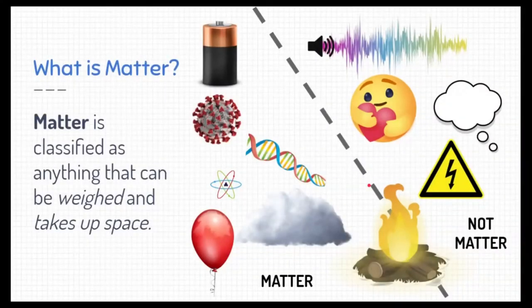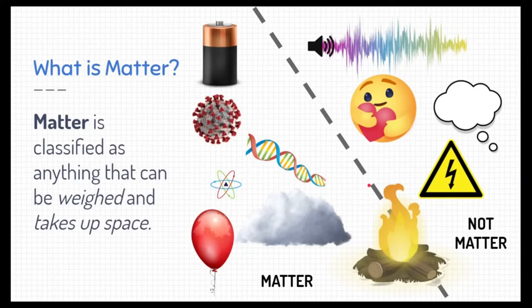But what is matter? Well, matter is classified as anything that could be weighed and takes up space. Look around you on your desk right now. All of those tangible things you see that could be weighed, that take up space on your desk, are pieces of matter. Here I have in my chart a bunch of examples of pieces of matter, like gas in the atmosphere such as clouds or a battery or a virus. Now things on the right over here are not matter. They can't be weighed. They don't take up space. Things like sound or feelings or thoughts, electricity, those are not matter because they don't fall into our classification of matter. This fire right here is kind of striding the line between matter and not matter. That's because the wood is matter, but the heat and the flames that come off the wood is not matter. It's more energy.